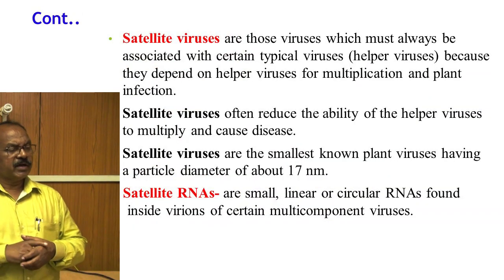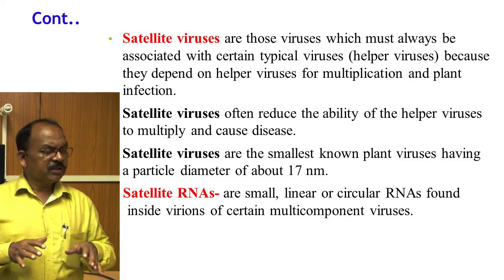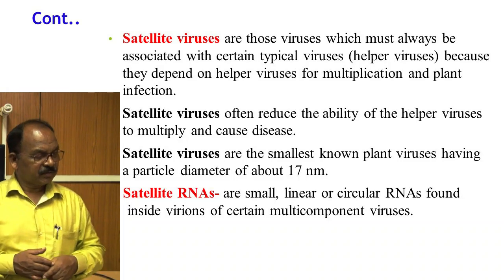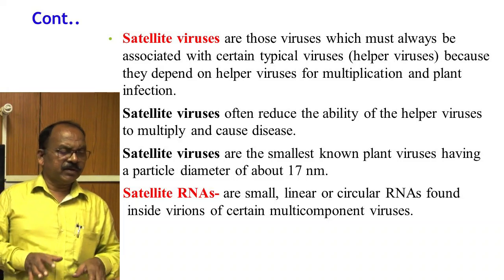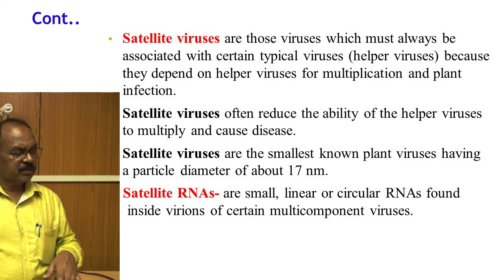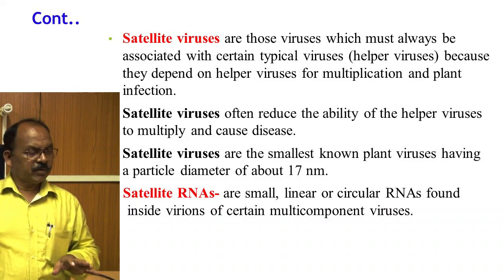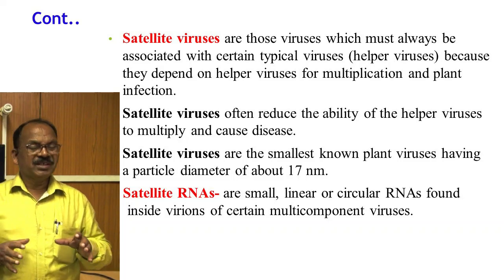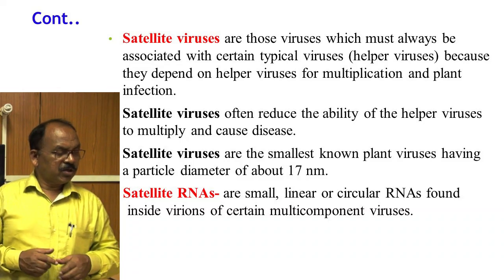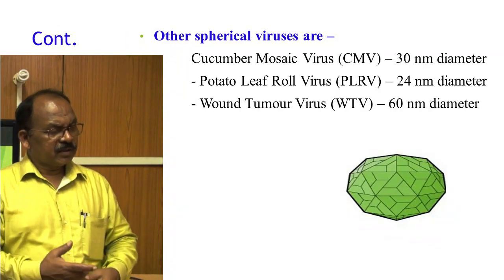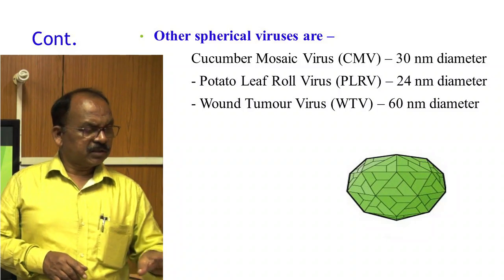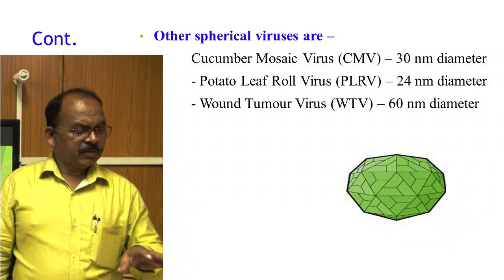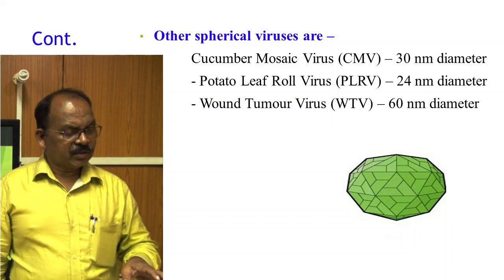What is a satellite virus? Satellite viruses are those viruses which must always be associated with certain typical viruses, called helper viruses, because they depend on helper viruses for multiplication and plant infection. Satellite viruses often reduce the ability of helper viruses to multiply and cause disease. Satellite viruses are the smallest plant viruses, having a particle diameter of about 17 nm. Satellite RNAs are small linear or circular RNAs found inside the virions of certain multi-component viruses. Other spherical viruses include Cucumber Mosaic Virus at 30 nm, Potato Leaf Roll Virus at 24 nm, and Wound Tumour Virus at 60 nm.